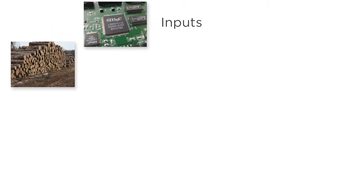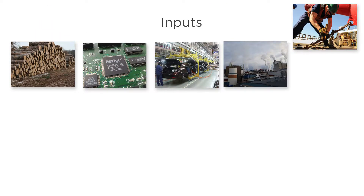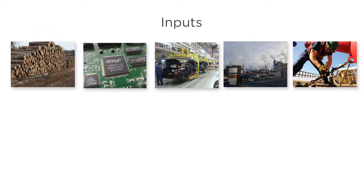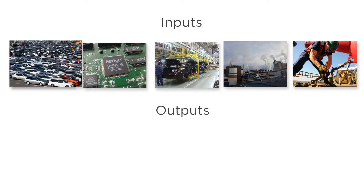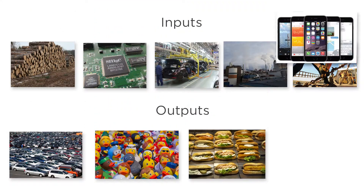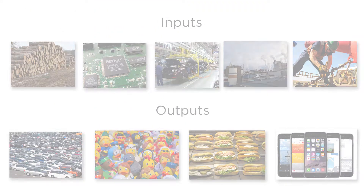Inputs are the things that firms use to make stuff. These might include raw materials, machinery, land, and workers. Outputs are whatever the firm is making — cars or toys or sandwiches or iPhones. Just as we simplified our model of consumer choice by limiting the choice to two goods, like pizza and cookies, we'll simplify our production model by focusing on just two inputs: labor and capital.